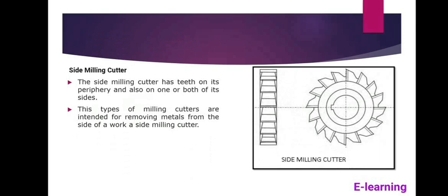The side milling cutters have teeth on their periphery as well as on one or both sides. This type of milling cutters are used for removal of metal from the side of the workpiece.